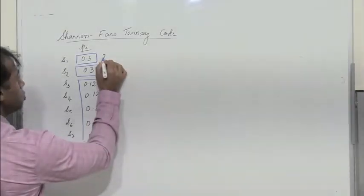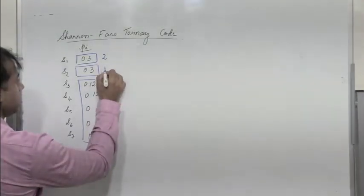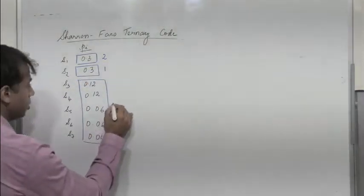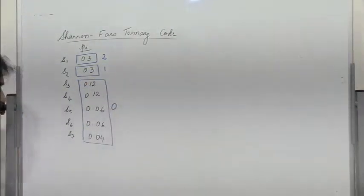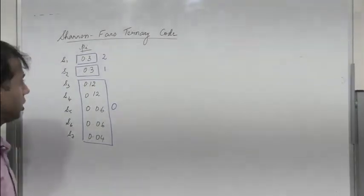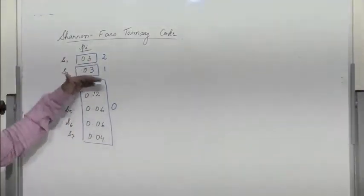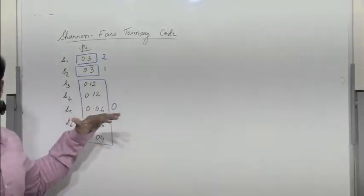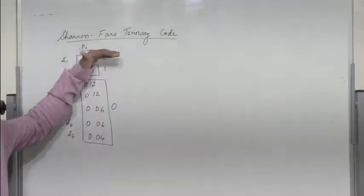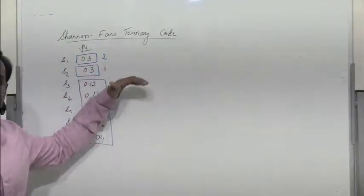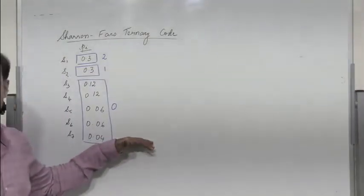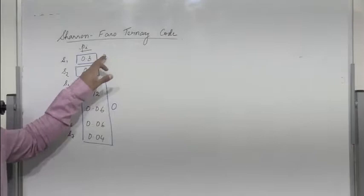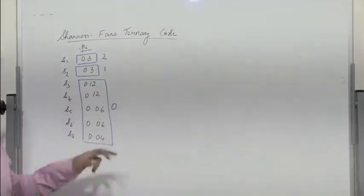We assign code 2 to the first group, code 1 to the second group, and code 0 to the third group. In binary code, we divide probabilities into two groups of nearly equal probability, assigning 1 to the first and 0 to the second. But here, dividing into three groups, we assign 2 to the first, 1 to the second, and 0 to the third.